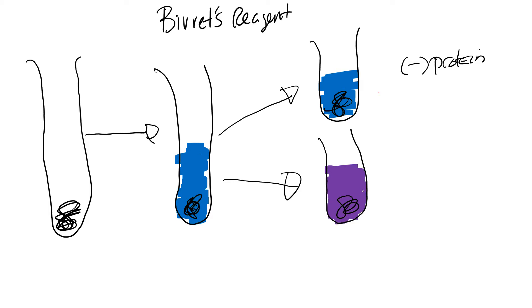It can also turn pink if the protein concentration is rather low. So this would be a positive Biuret test. To review: Step 1 — add your sample to the test tube. Step 2 — add the Biuret reagent and wait. If it remains blue, the sample is negative for protein. If it turns purple, it's positive. The deeper the purple, the more protein is present in the sample.